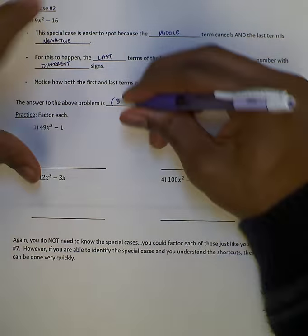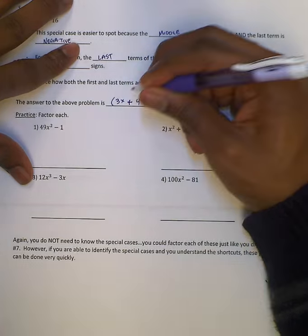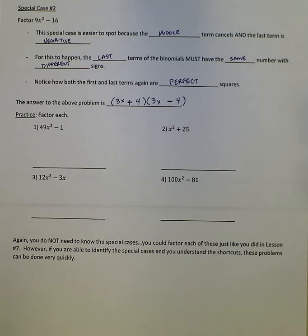And like I said, the signs will be different signs. So 3x plus 4, 3x minus 4. Again, that shortcut kind of eliminates using the brute force in this case.